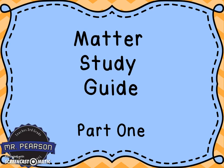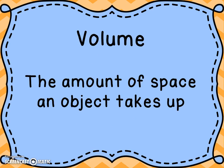This is part one of the matter study guide. Volume is the amount of space an object takes up. This is one of your vocabulary words. A balloon has volume — it's the amount of space it takes up. A baseball helmet has volume. Everything has volume.